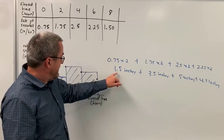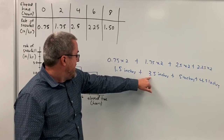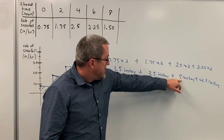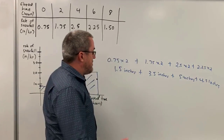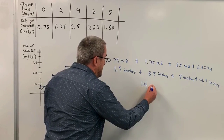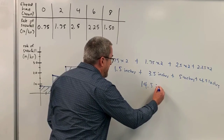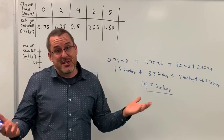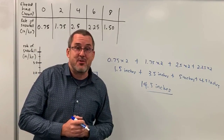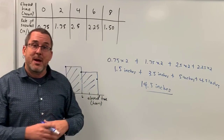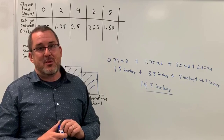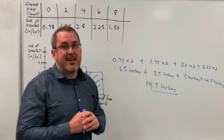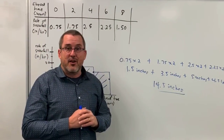Adding them all together: 1.5 plus 3.5 is 5 inches, plus another 5 inches is 10 inches, plus 4.5 gives a total of 14.5 inches of snowfall. Again, this is an estimation — an approximation of what really happened during this storm — but maybe a better estimation than before, since we're now taking into account the varying snowfall rates.